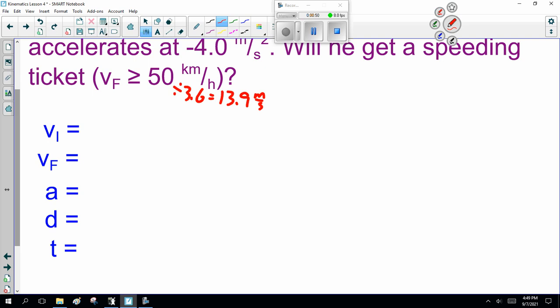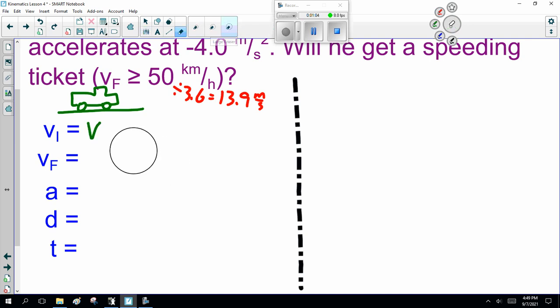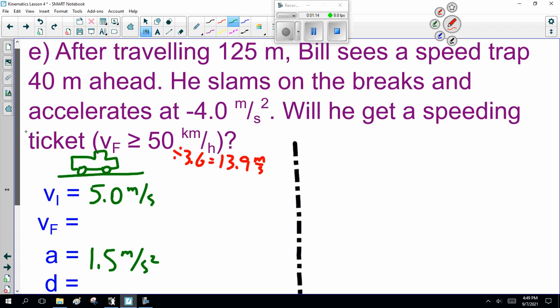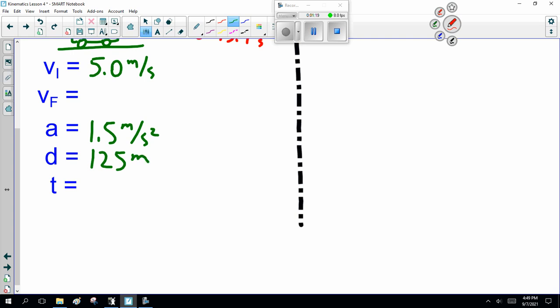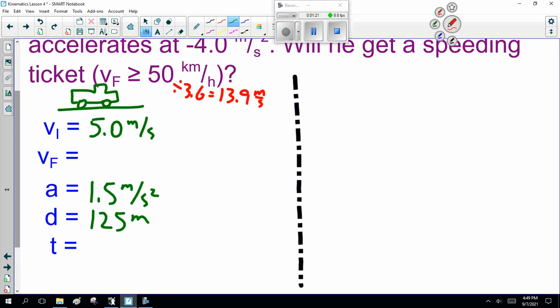Now, I want you to look at this carefully because there's actually a sneaky trick here. The sneaky trick is this is a two-parter. We have Bill as he's driving down the road. Here, he's leaving the parking lot. V_i = 5.0 m/s. We don't know his V_F. We know his acceleration is 1.5 m/s². He travels 125 meters.